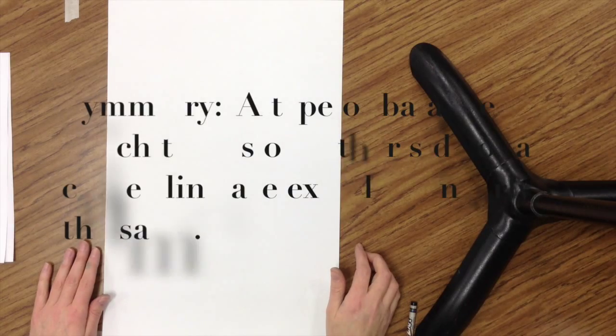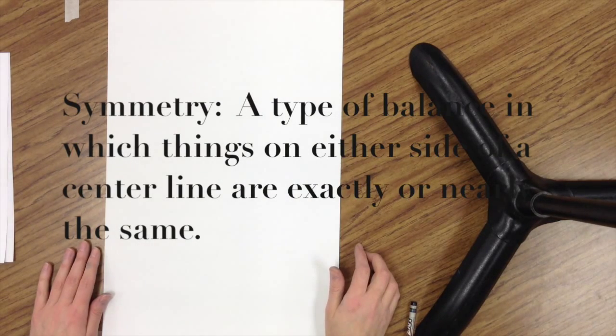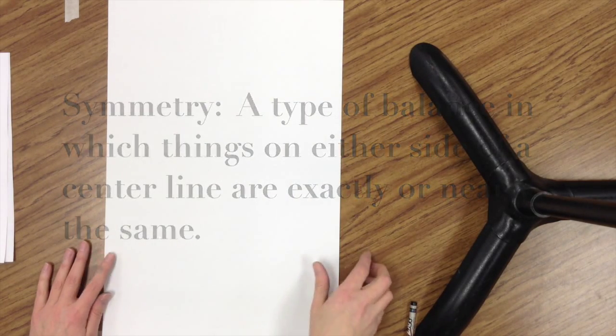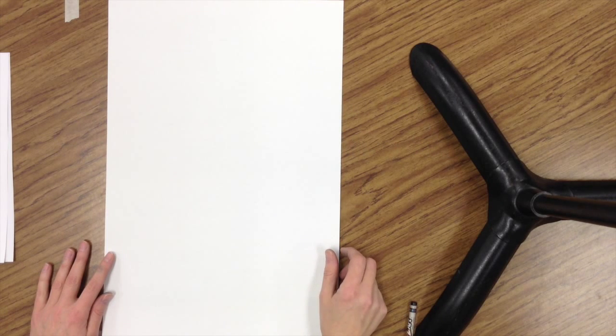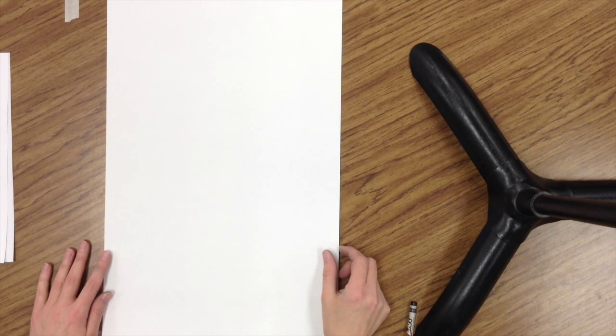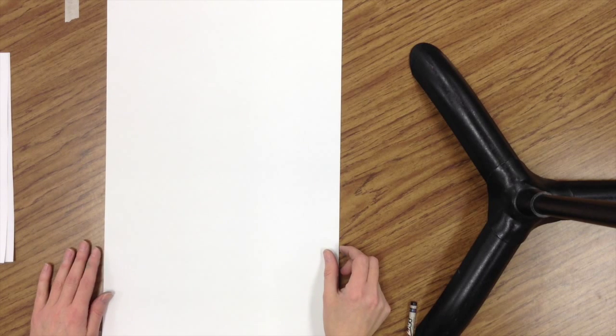We are going to make a symmetry creature today using the transfer method. You can decide on any kind of creature that you want. It can be an animal, it can be a person, it can even be a made-up creature like an alien or monster.